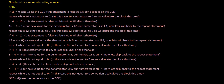Now let's take a more interesting number: 4 over 16. If 16 equals zero, take 16 as the GCD. This statement is false, so we don't take it as the GCD. Repeat while 16 is not equal to zero. In this case, 16 is not equal to zero, so we calculate the block this time. If 4 is more than 16, this statement is false, so let's skip until after otherwise. 16 minus 4 equals 12. Our new value for the denominator is 12. Our numerator is still 4.